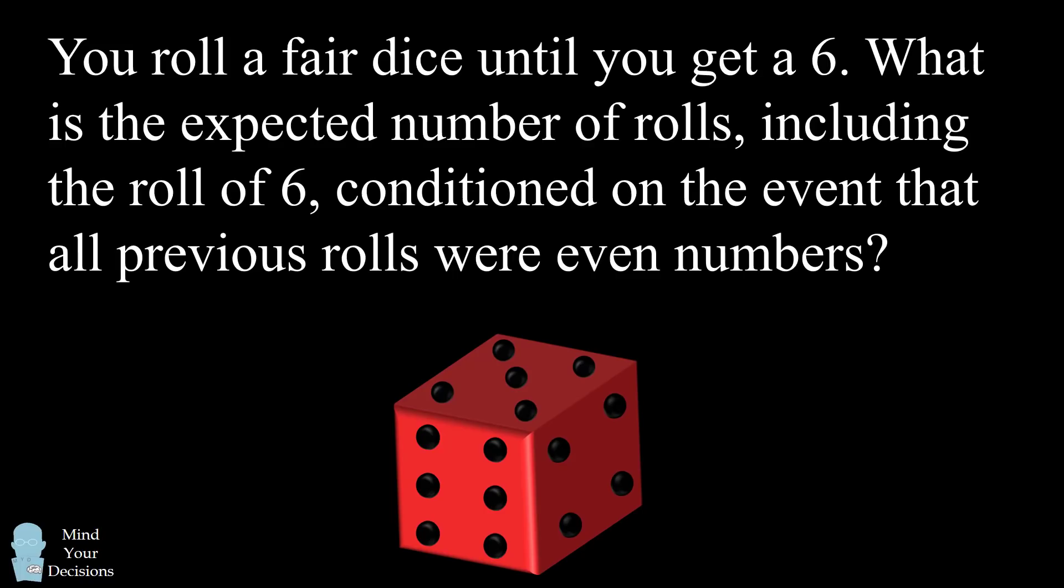Hey, this is Presh Talwalker. You roll a fair dice until you get a six. What is the expected number of rolls, including the roll of six, conditioned on the event that all previous rolls were even numbers?